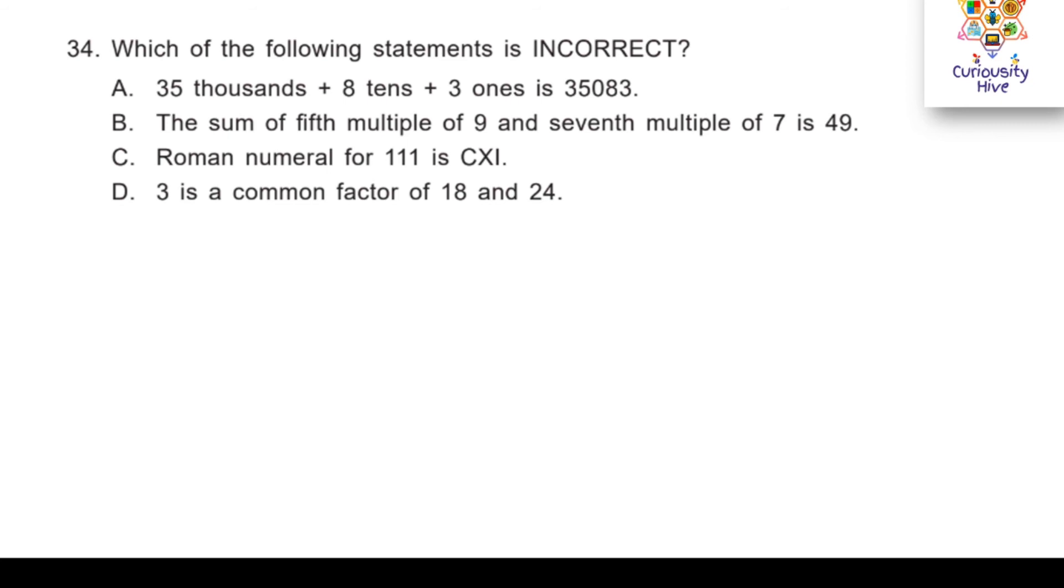You should be able to spot this quickly because if you look at B, it says sum of fifth multiple of 9, which is 5 times 9, and seventh multiple of 7, which is 7 times 7, is supposed to be 49. But if you notice 7 times 7 itself is 49 and 5 times 9 is 45. Definitely the sum of these two will be greater than 49 and not equal to 49. Hence, B is the incorrect option.